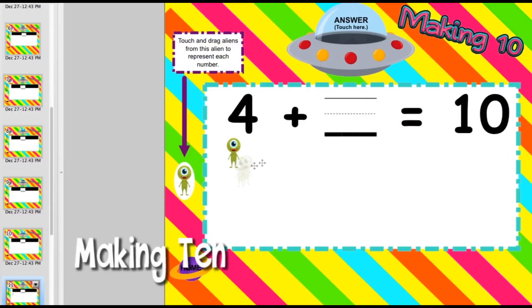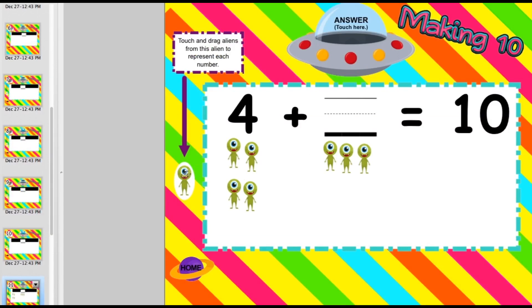In this making 10 space game, students move aliens to symbolize each number and then they add on to see how many more they need to get to 10. Then they write that number in the blank, touch the spaceship to check their answer.